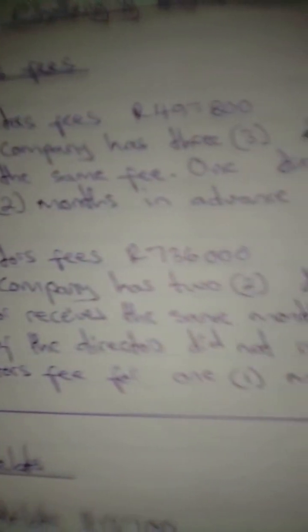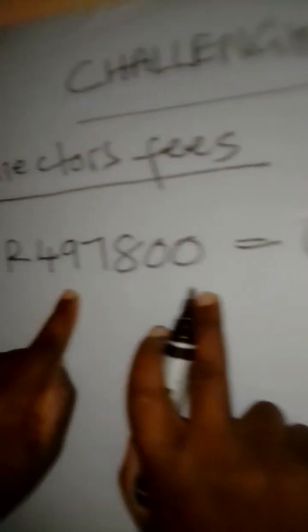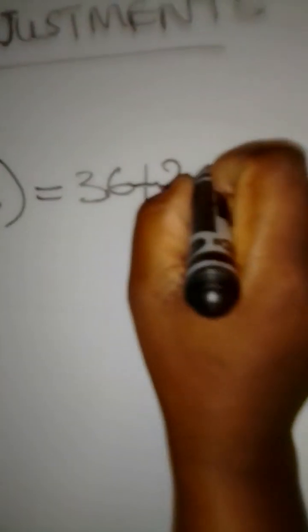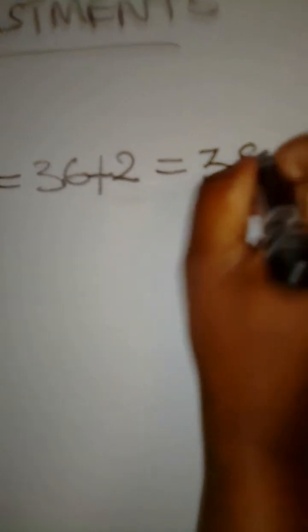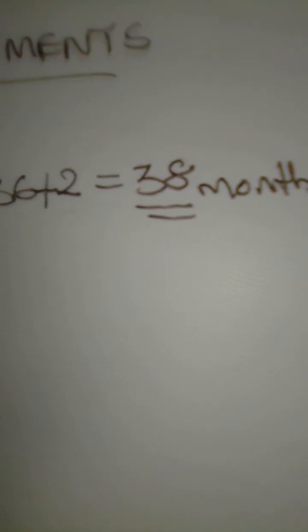For three directors in one year, we have 36 months. But there's one director who is having an advance, two months in advance. So to mean that this $497,800, it is not for 36 months but for how many months? We are going to add another two months. It's for 38 months. $497,800 is for 38 months.